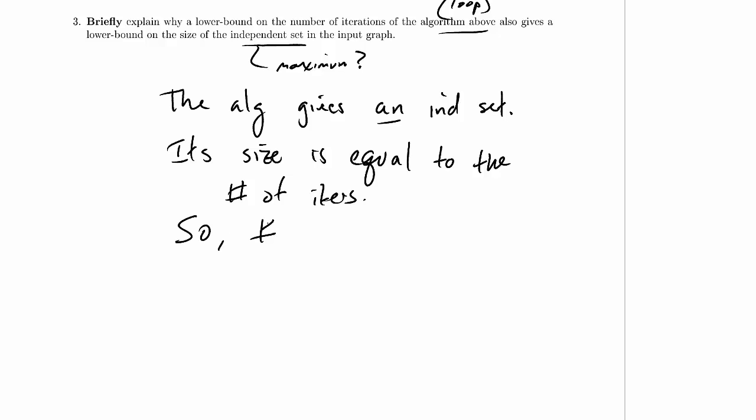So, the number of iterations is a lower bound on the size of the maximum independent set.